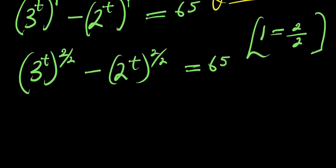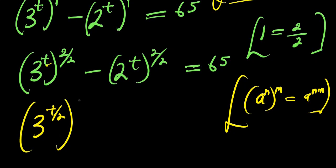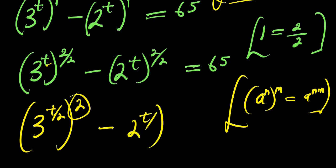I make use of the identity: a power n, all raised to power m, equals a power n times m. So multiplying t times 2 gives 2t, divided by 2. I can simply have 3 power t over 2, raised to the power of 2 — there's the 2 I mentioned — minus 2 power t over 2, raised to the power of 2. This equals 65.